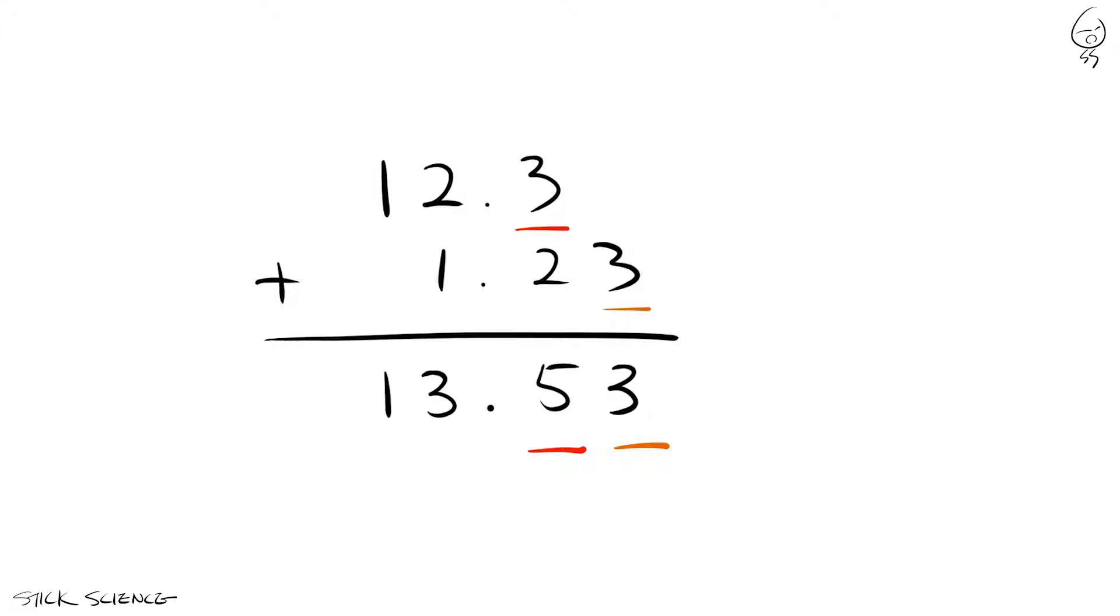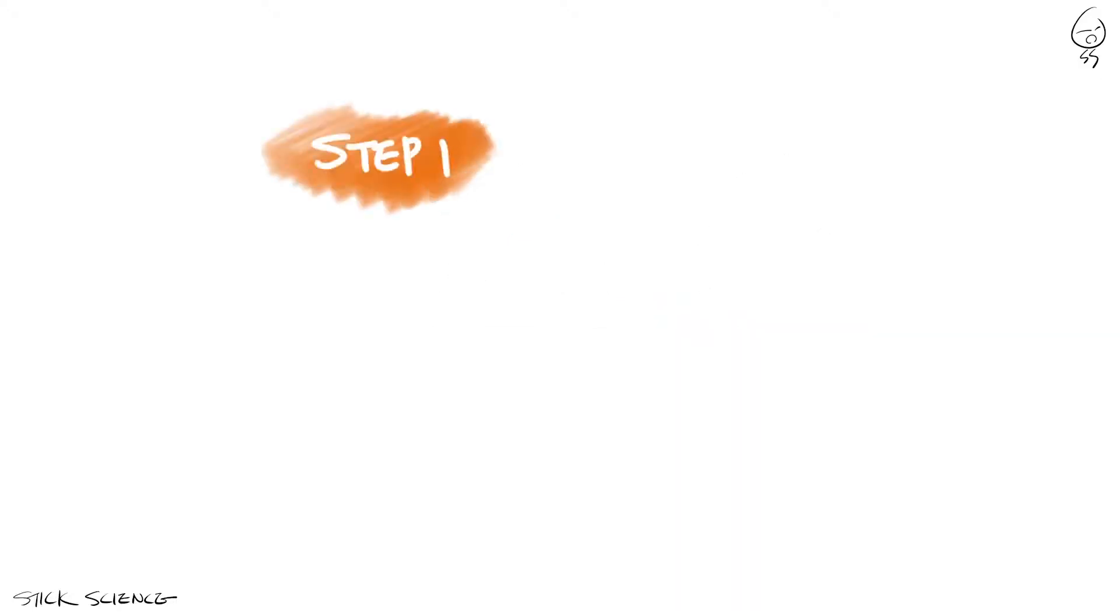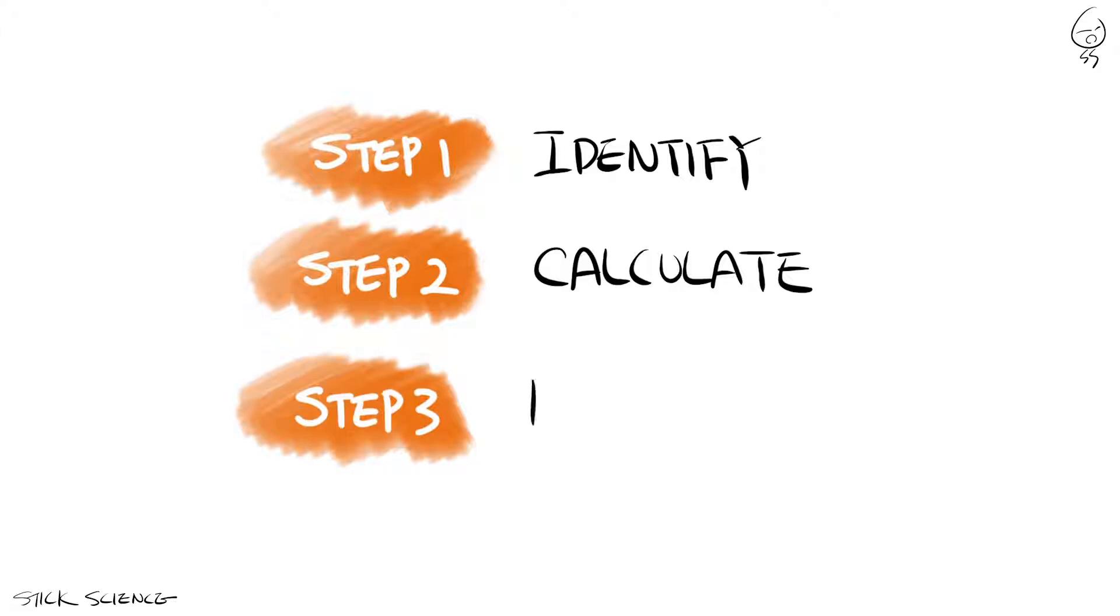Given the situation, smart people decided it was good enough to truncate the final result so as to leave just one uncertain digit. Hence the rule, identify the place of uncertainty in the least precise number and match it.